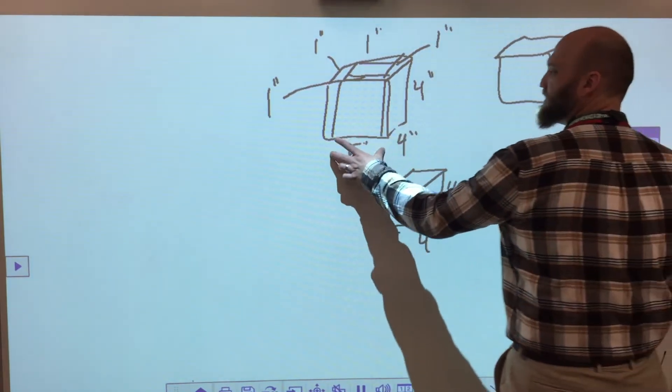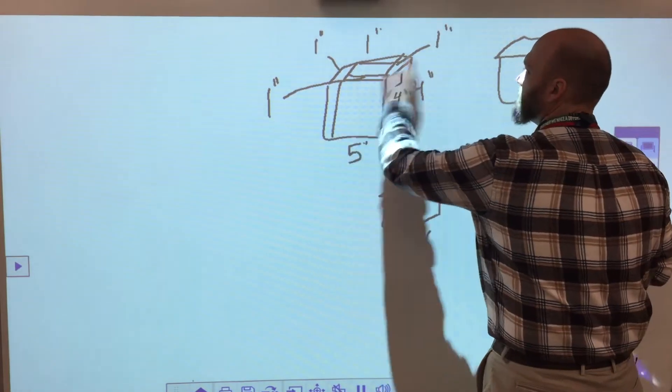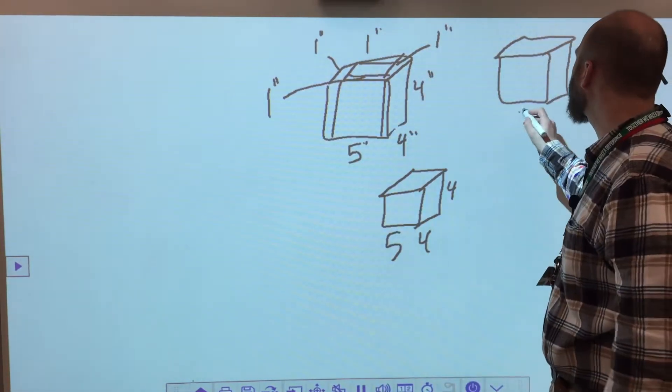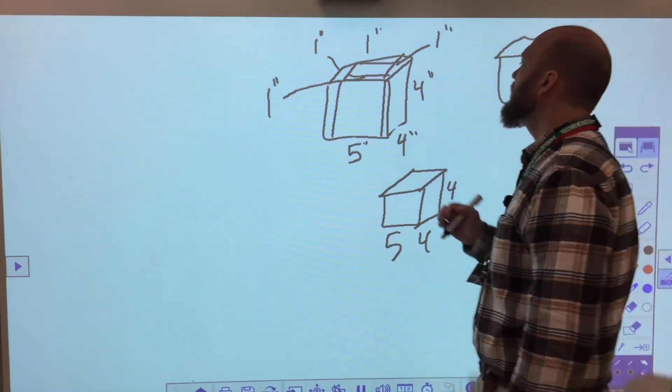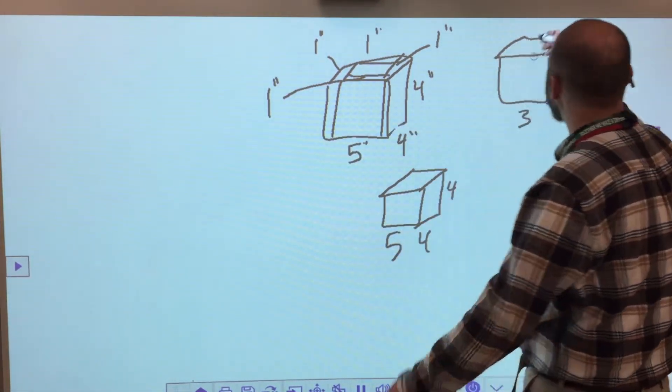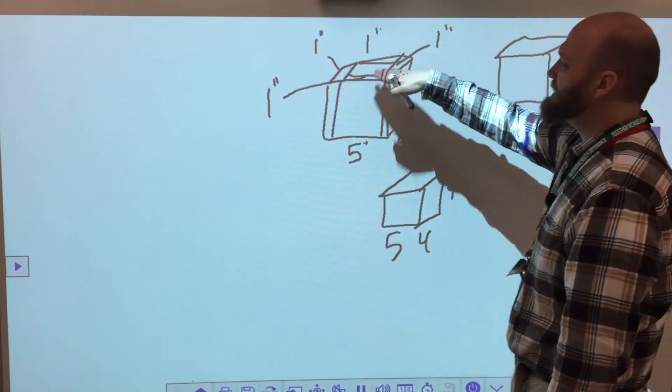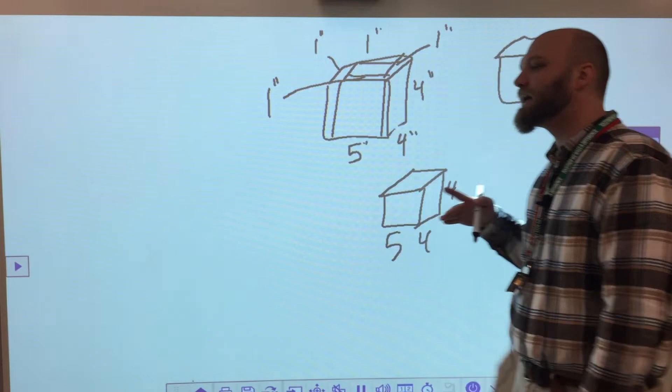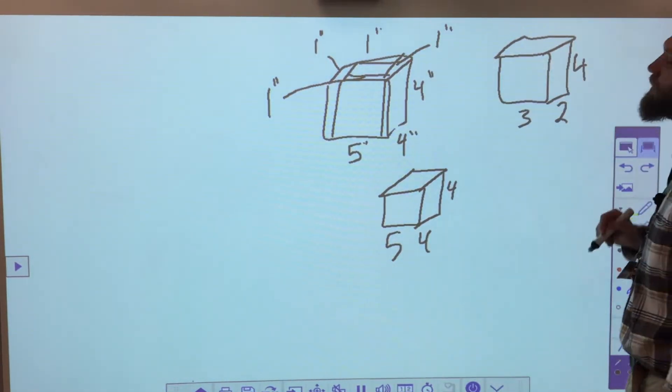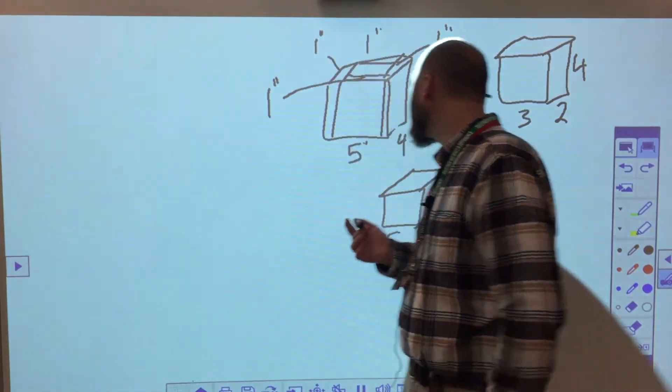This is the inside. So if the width is 5, but I took an inch off the right and an inch off the left, my width now is 3. If my depth is 4, but I took an inch off the front and an inch off the back, 4 minus 2 is 2. Now, I didn't take any off the top, and I didn't take any off the bottom, so that's still going to be 4. So now I have the new dimensions of my rectangular prism and the volume.